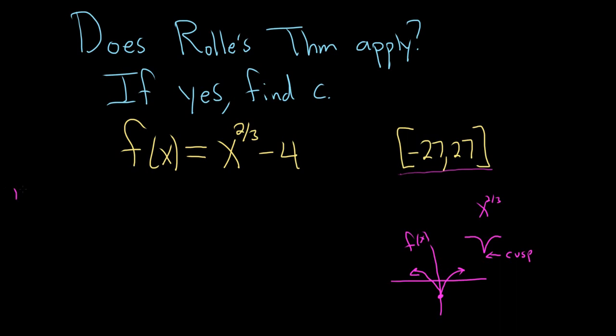Step one is to check that it's continuous. The cusp is certainly continuous. There's no holes or breaks, so the first condition in Rolle's is satisfied. So f is continuous on negative 27 comma 27.